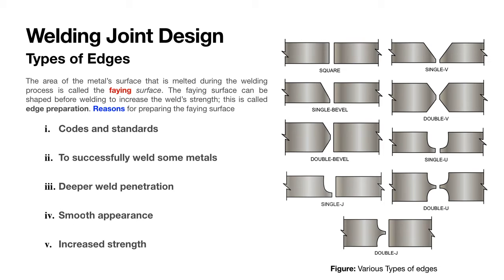So based on the type and shape of the surface preparation, there are various types of shapes. For instance, we have got square, which is the simplest type of joint. Then we have got V-joint, double V-joint which is on both sides of the weld. Then bevel is a single cut on an inclined plane. Then we have got double bevel, then J, then single J, double U, double J, etc. So these are basically the types of edges which can be prepared for welding joint design.